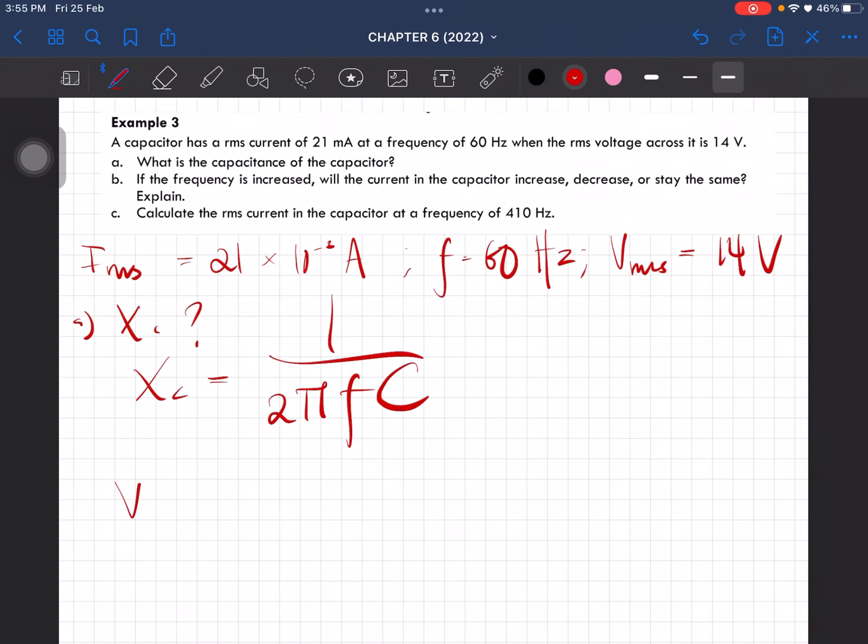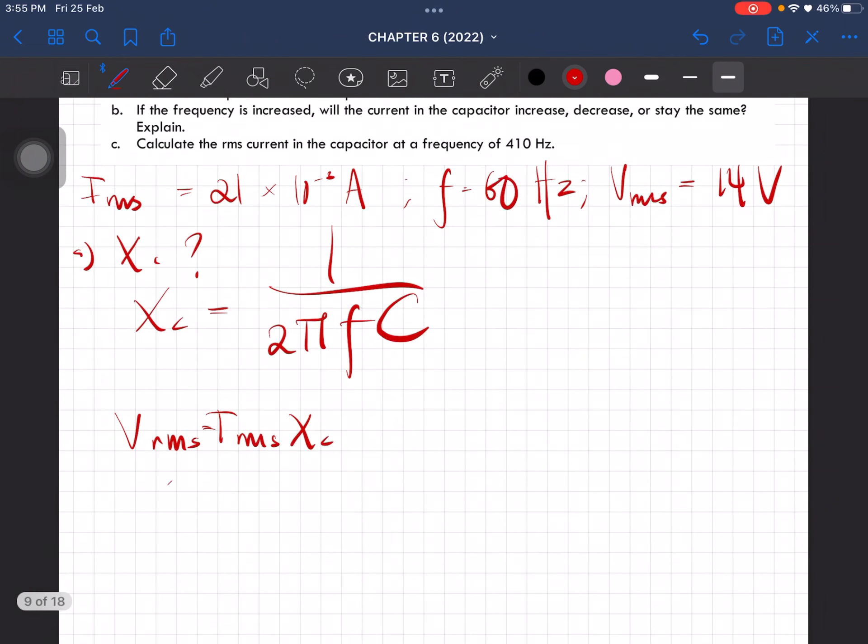Let's use this equation to find XC. This will give us 667 ohm.